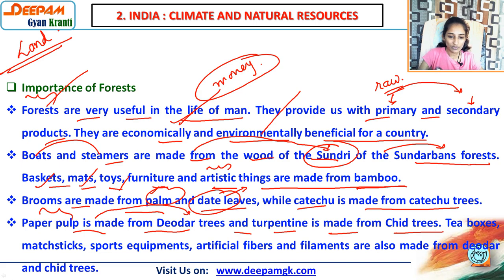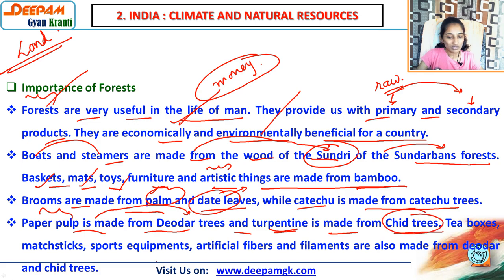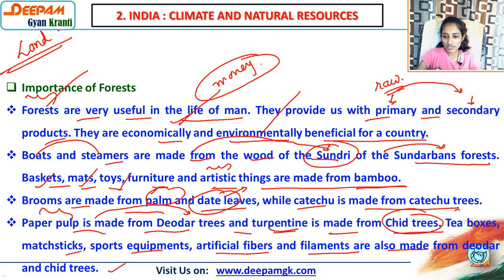Timber is made from deodar trees, and turpentine — a kind of liquid color — is made from chir trees. Tea boxes, matchsticks, sports equipment, artificial fibers, and filaments are also made from deodar and chir trees. Tea boxes are used when fruits are transported and packed. Matchsticks you know very well. Sports equipment like bats, stumps, and golf sticks — all are made from these trees.